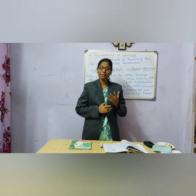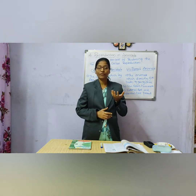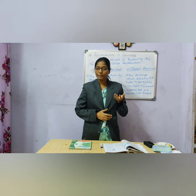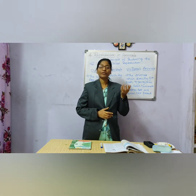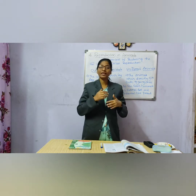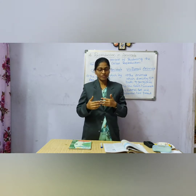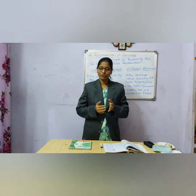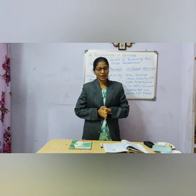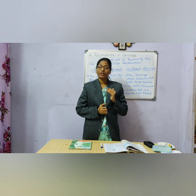In plants, the flower is the reproductive part where we can see male and female parts. When they fuse to form a zygote, and through different steps a new plant is formed, that is called sexual reproduction. Now we are going to see different modes of reproduction in animals.